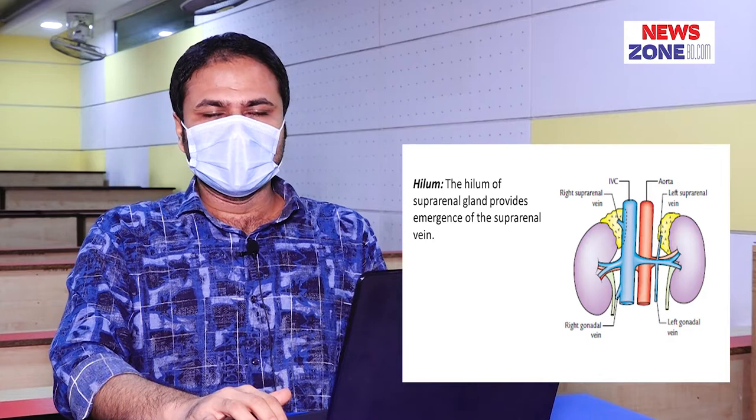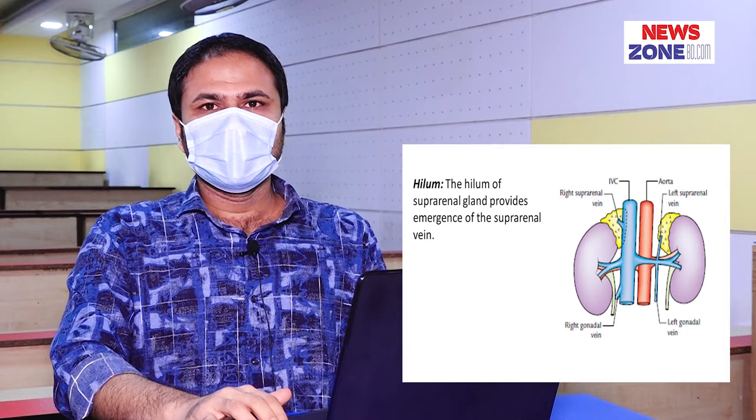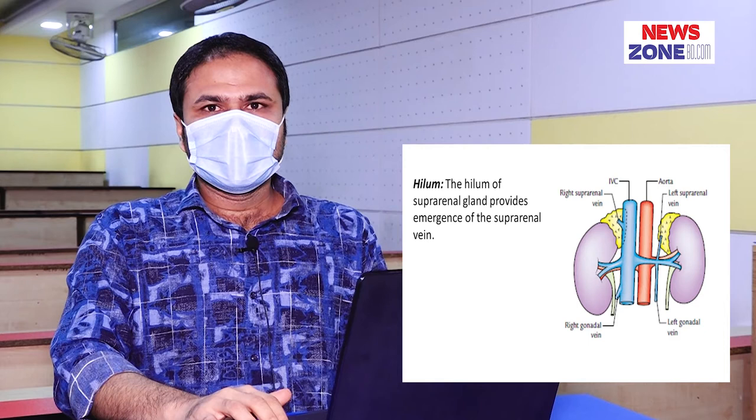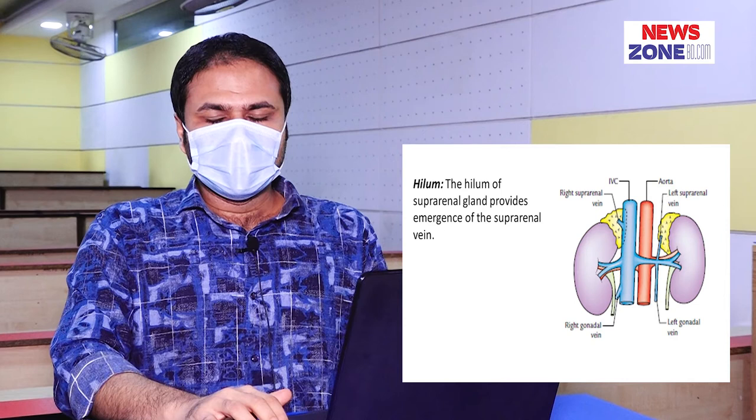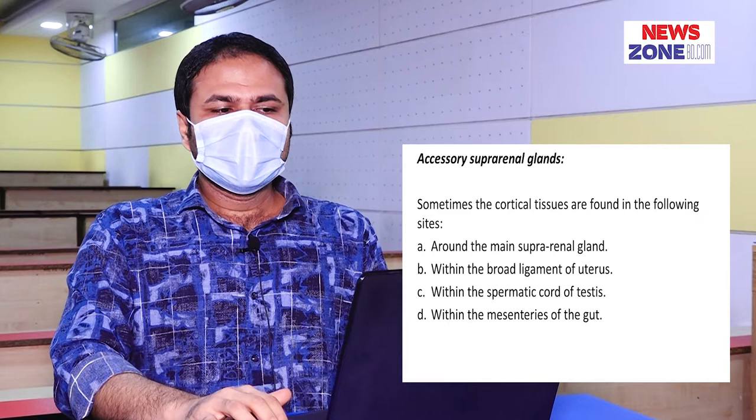Hilum of the suprarenal gland. The hilum of the suprarenal gland provides emergence of the suprarenal vein. Regarding the position of the hilum: in the case of the right suprarenal gland, it is near the upper end; in the case of the left suprarenal gland, it is near the lower end of the gland.